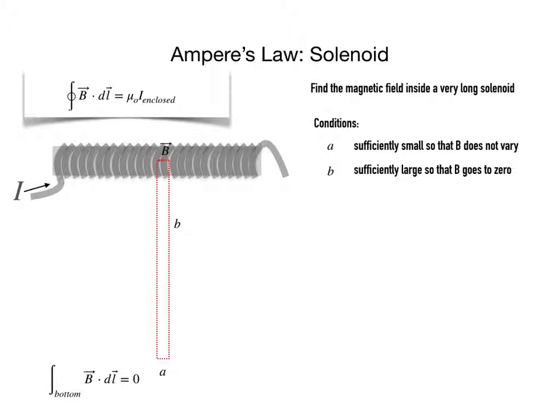So with that you can see that the value of B dot dℓ at the bottom portion of our path is going to be simply zero because we are so far from the solenoid that the magnetic field is zero there. Now let's look at the sides.